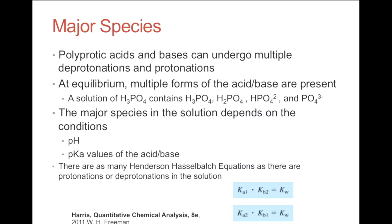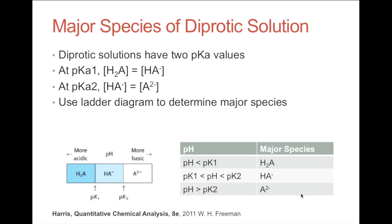There are as many Henderson-Hasselbalch equations as there are protonations or deprotonations in the solution. This figure demonstrates how to convert from Ka to Kb. For a diprotic solution, there are two pKa values. At pKa1, the concentration of H₂A equals the concentration of HA⁻, and for pKa2, the concentration of HA⁻ equals the concentration of A²⁻.